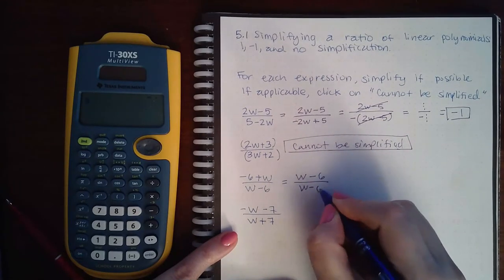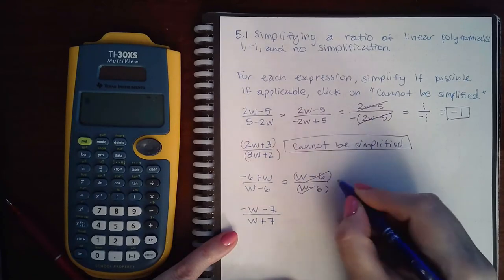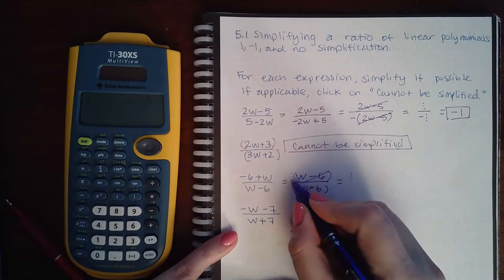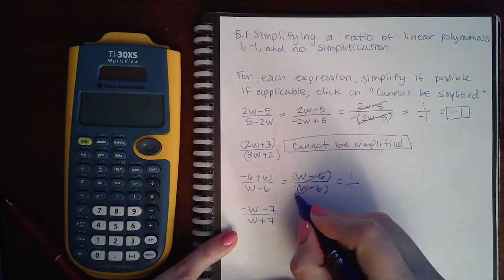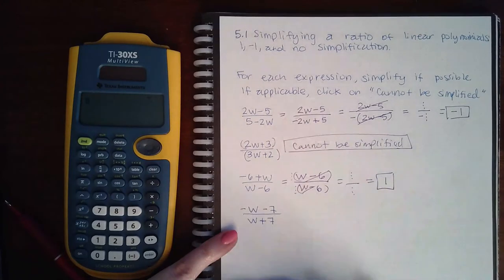these are actually completely the same. So this will reduce with this, leaving me with an invisible one on top over the invisible one on the bottom. The final answer reduces down to just 1.